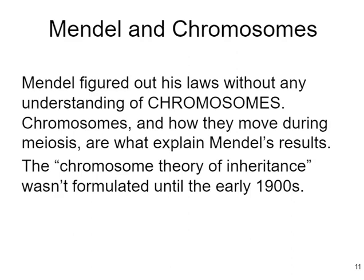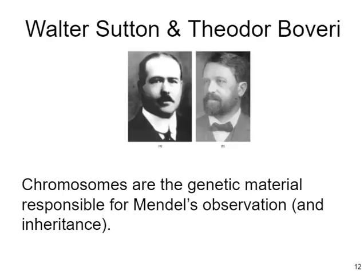Chromosomes and how they move during meiosis explain what Mendel observed. Our understanding of chromosomes, today called the chromosome theory of inheritance, was formulated in the early 1900s, some decades after Mendel did his work. Two scientists instrumental in developing this theory were Walter Sutton and Theodore Boveri, who are credited with the statement that chromosomes are the genetic material responsible for Mendel's observations and therefore inheritance.